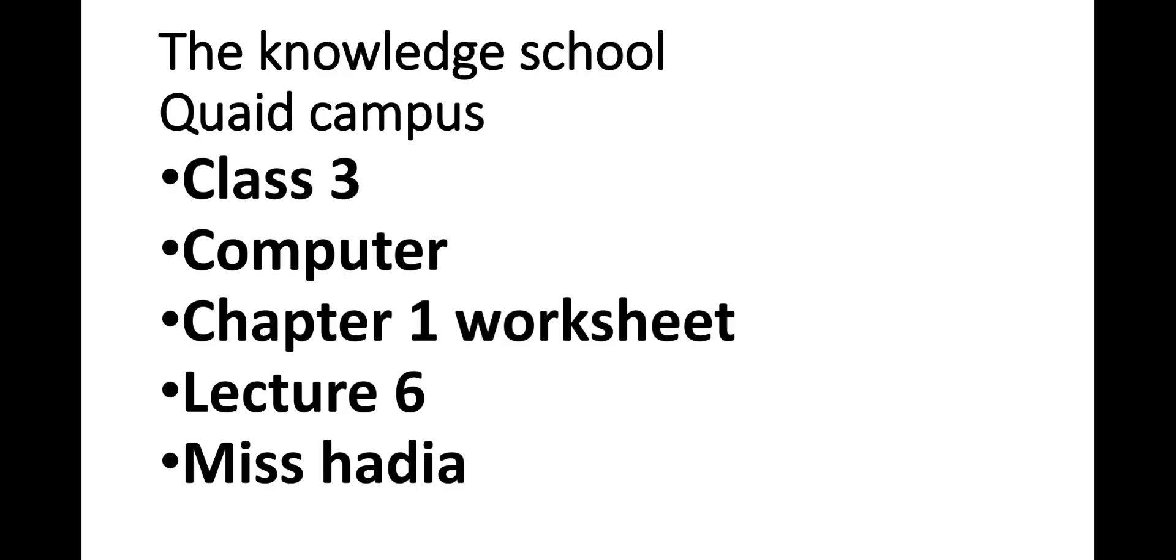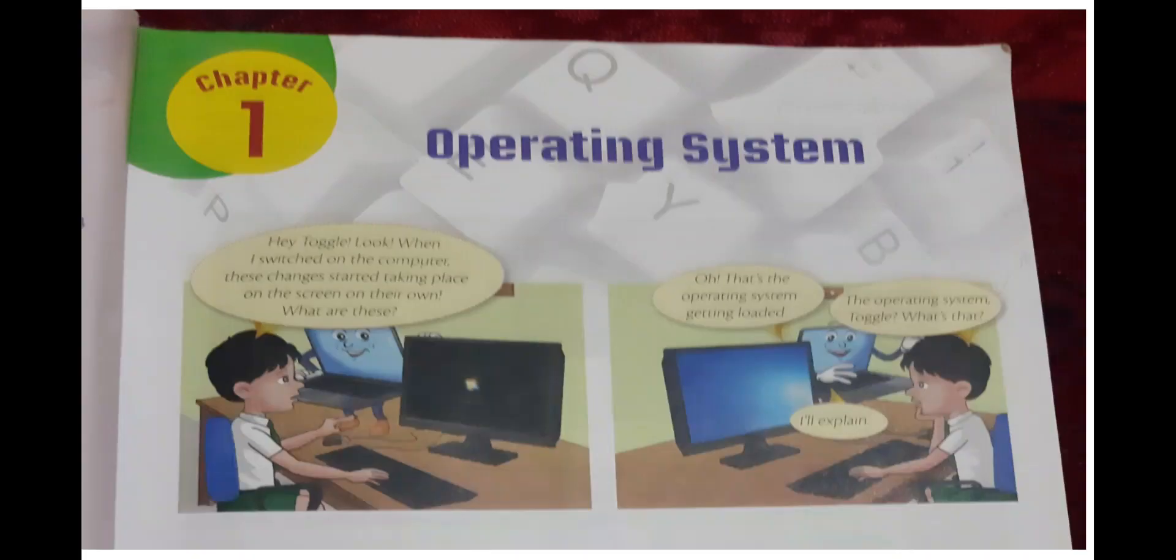Bismillahirrahmanirrahim, Assalamu Alaikum. The Knowledge School Kait Campus, Class 3 Computer, Chapter Number 1 Worksheet, Lecture Number 6. In the previous lecture we discussed the topic Operating System. We learned about how to operate the system and what are the main components of the operating system and how to use the computer. So today we start the objective part of Chapter Number 1.